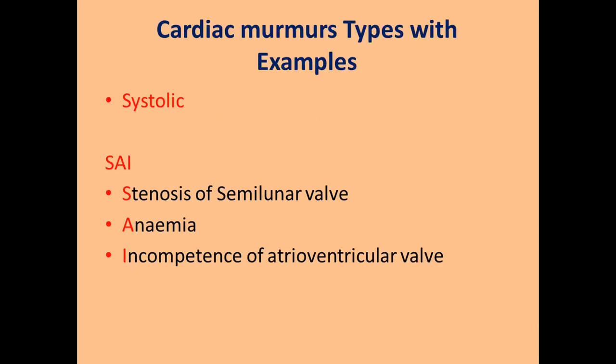Let's see the second mnemonic: cardiac murmurs types with examples. Abnormal heart sound is called a murmur, and it is of four different types: systolic, diastolic, continuous, and pansystolic. For systolic murmur, the mnemonic is SAI — like Sai Baba. S stands for stenosis of semilunar valve, A for anemia, and I for atrioventricular valve incompetence.